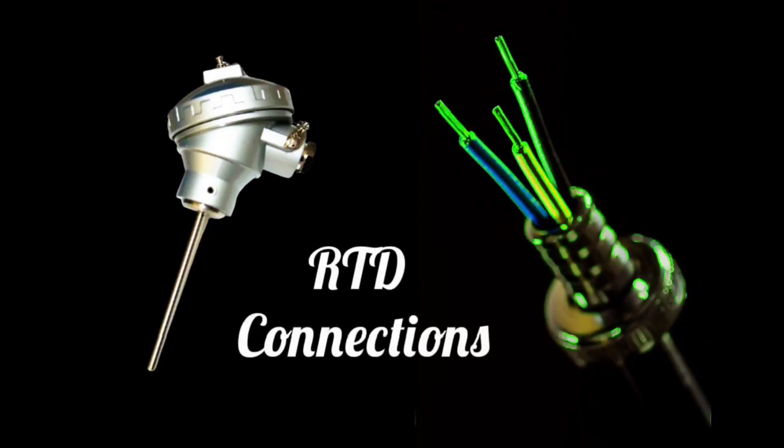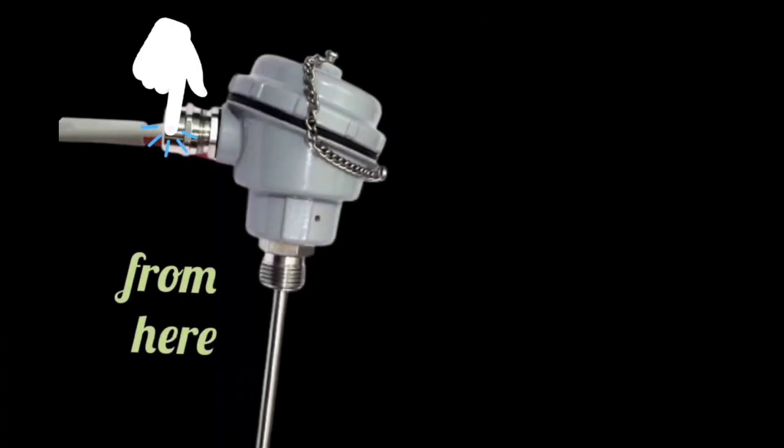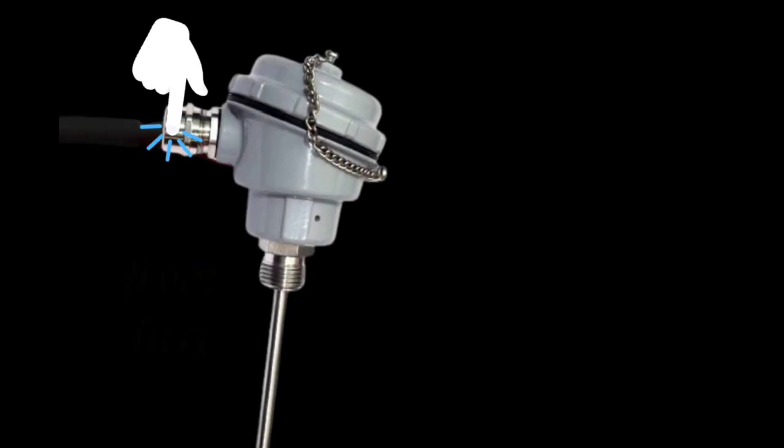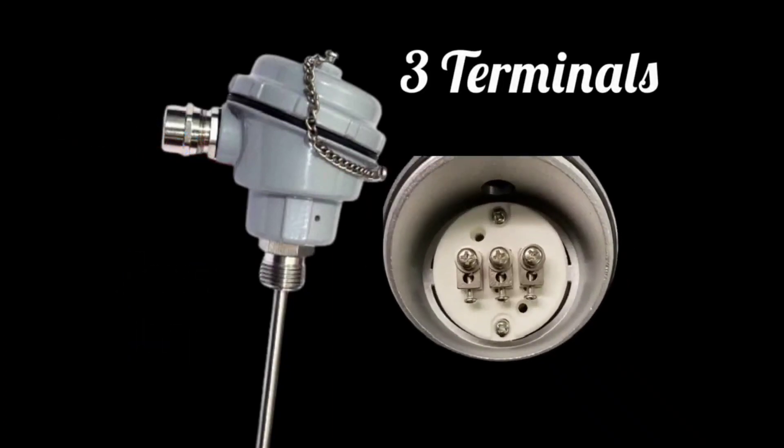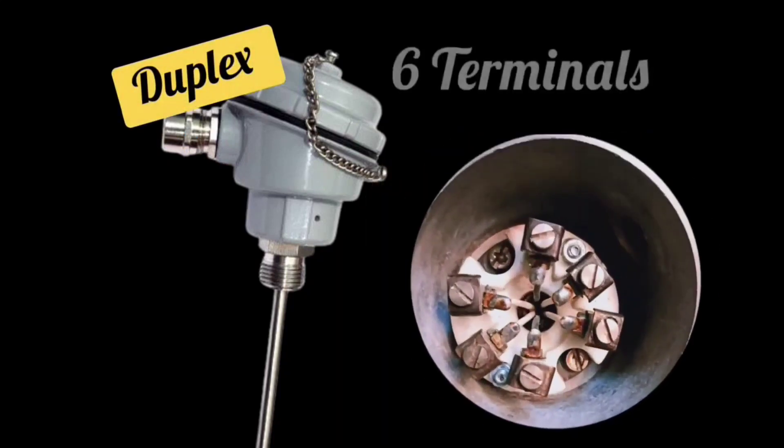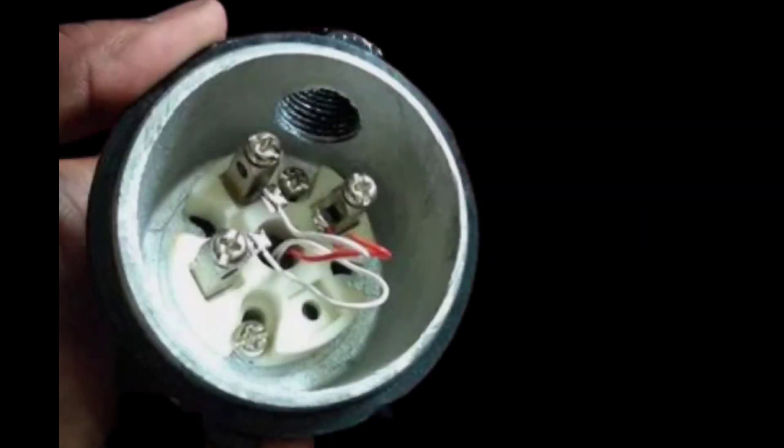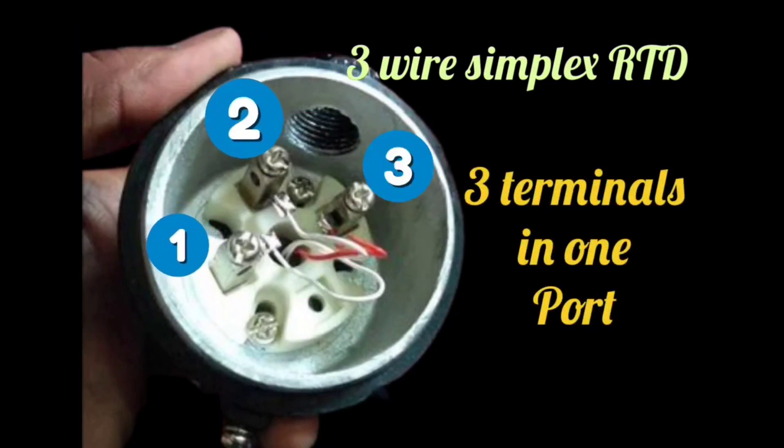Let's discuss the connections of RTD. For RTD connections, you need to insert the wire. For connections in RTD, you will see three terminals. And if you are using duplex RTD, then you will see six terminals. Suppose there is a three-wire simplex RTD. It will have one port and three terminals.